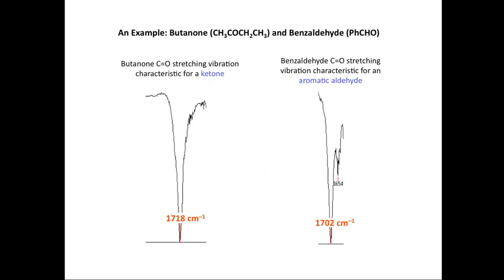If we now compare the aldehyde with a ketone, in this case butanone, we can see that the CO stretching vibration moves lower. It moves to 1718 in butanone, which is characteristic for a ketone.